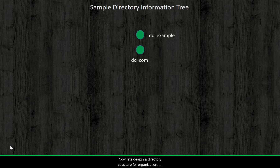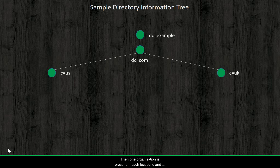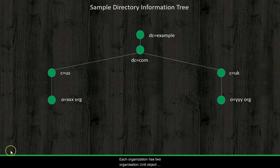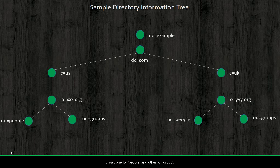Now let's design a directory structure for our organization which has presence in multiple geographical locations. So we are branching out to two country object classes. Then one organization is present in each location, so we are branching out accordingly. Each organization has two organizational unit object classes.